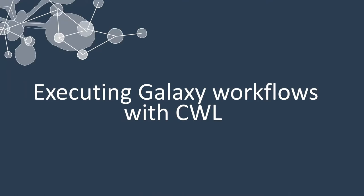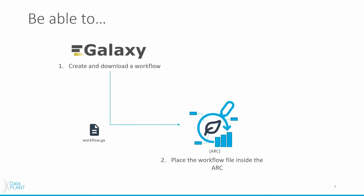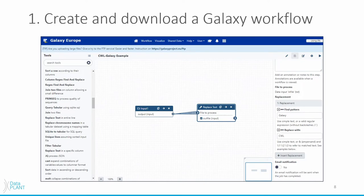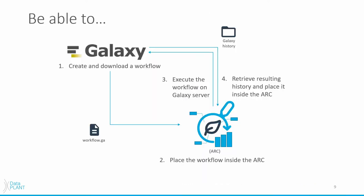To illustrate the feasibility of this approach, we selected Galaxy as our workflow system of choice. Let's take a look at what we want to be able to do at the end of this example. In step one, we want to use the excellent UI of Galaxy to create and download a workflow. In step two, we want to place the workflow inside the ARC. Then in step three, the ARC should be able to execute the workflow on the Galaxy server and retrieve the resulting history in step four. Step one is already provided by the Galaxy platform. I've created a simple workflow that takes an input file, looks for the word Galaxy and replaces it with CWL. We can download this workflow by pressing on the wheel in the top right corner and selecting Download, which will give us the workflow as a file with the ending .ga. With step one out of the way, we can now proceed with step two and place our workflow.ga file inside the ARC.